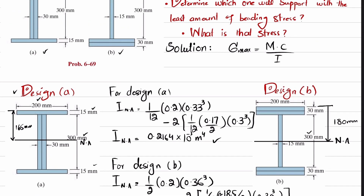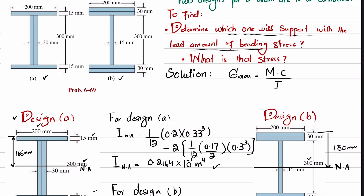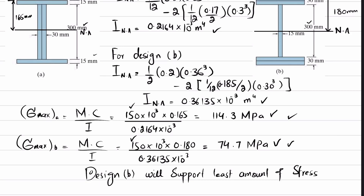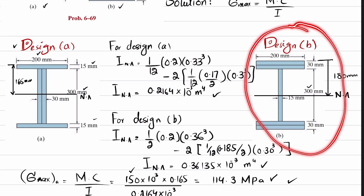We now have two stresses: 114.3 MPa for Design A and 74.7 MPa for Design B. The question asks which design supports the moment with the least bending stress. For the same moment, Design B will support the least amount of stress. So the answer is Design B, and the minimum bending stress is 74.7 MPa.